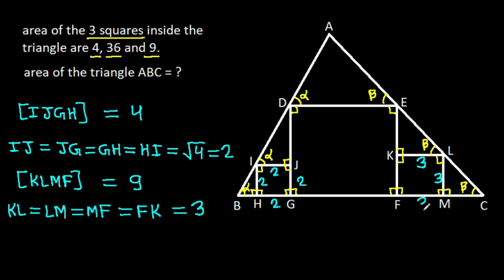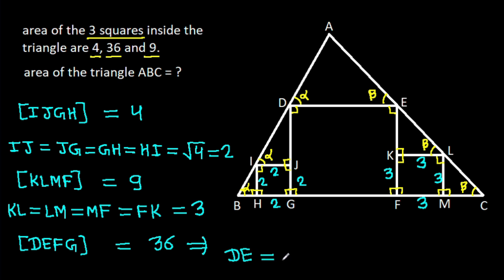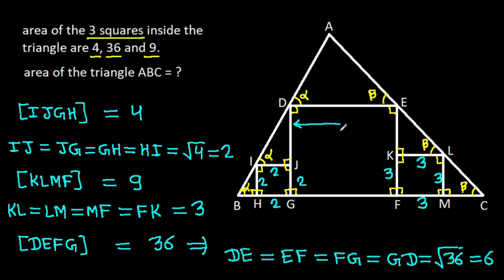So the side of the second square is 3: IJ will be 3, MF will be 3, and FK will be 3. Also, we have area of square DEFG is 36. That means DE = EF = FG = GD = √36 = 6. So DE is 6, GF is 6. And EK = 6 − 3 = 3, and DJ = 6 − 2 = 4.